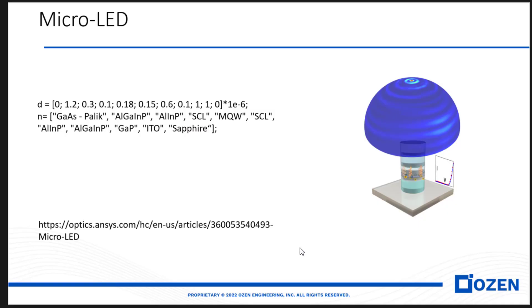The micro LED that I would like to discuss today is based on this link. If you go to the ANSYS website, you can find the details. Here is the information that I would like to insert in the numerical stack. You can see we have different layers like gallium arsenide, aluminum gallium indium phosphide, aluminum indium phosphide, and also other layers.